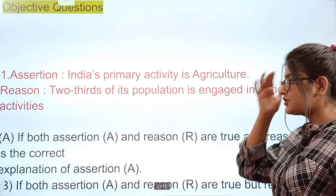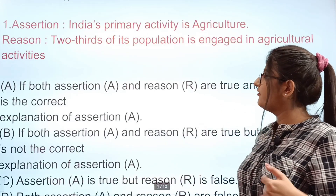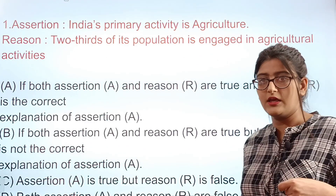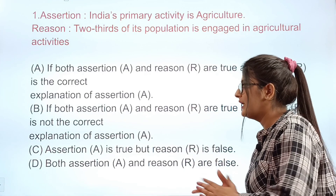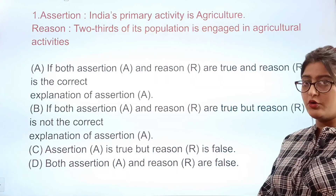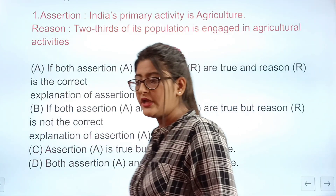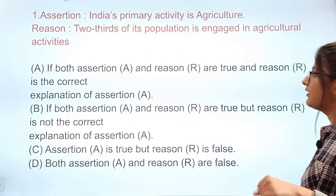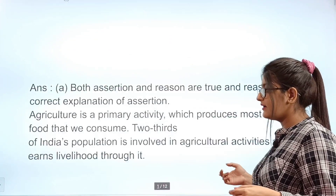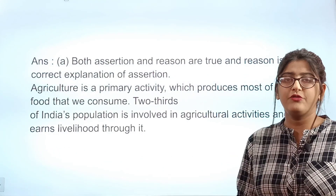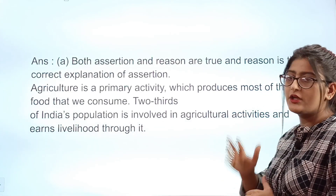Question 1 is an assertion and reason question. Assertion: India's primary activity is agriculture. Reason: Two-thirds of its population is engaged in agriculture activities. Option A: both assertion and reason are true and reason is the correct explanation. Option B: both true but reason is not the correct explanation. Option C: assertion true but reason false. Option D: both false. The correct answer is Option A — both are true and reason is the correct explanation.